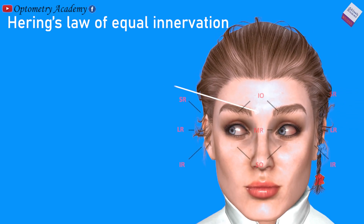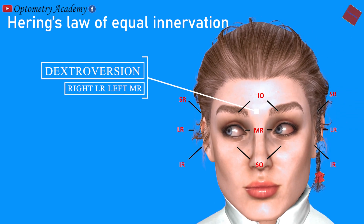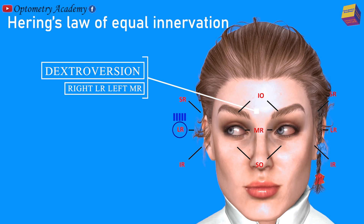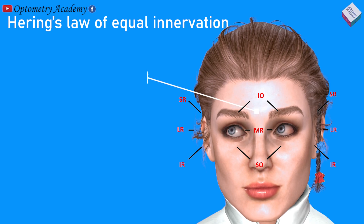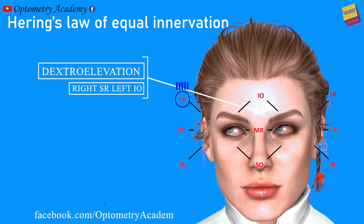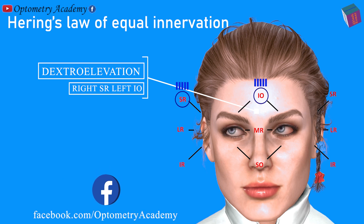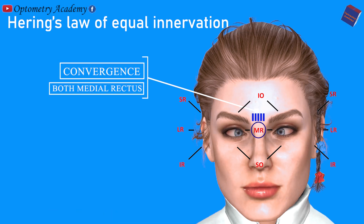For example, in rotating the eye to the position of dextroversion, an equal and simultaneous energy will flow to right lateral rectus and left medial rectus. Similarly, if the eyes are turned to the position of dextroversion, an equal and simultaneous amount of innervation will flow to right superior rectus and left inferior oblique. During convergence, an equal and simultaneous innervation will flow to both medial rectus.